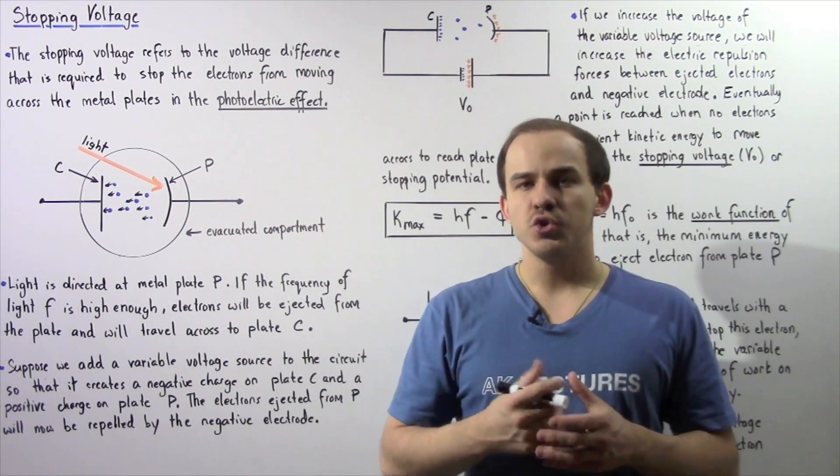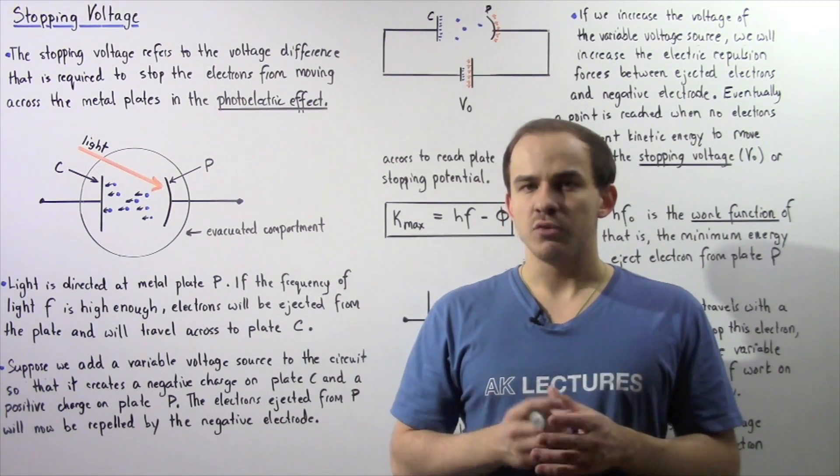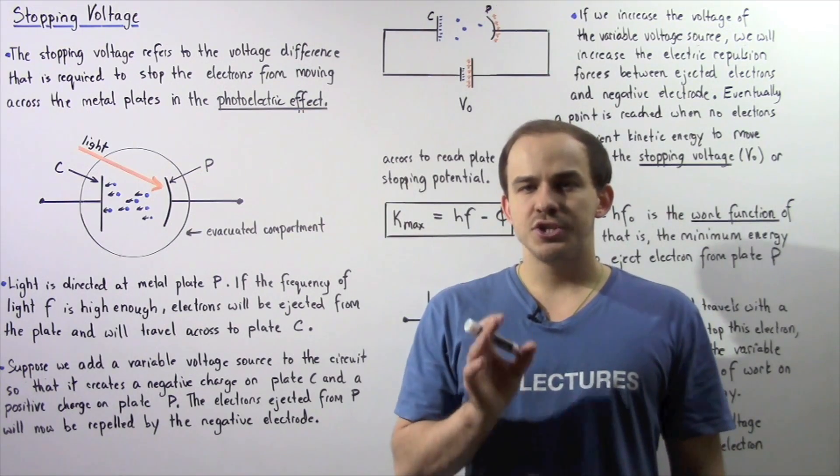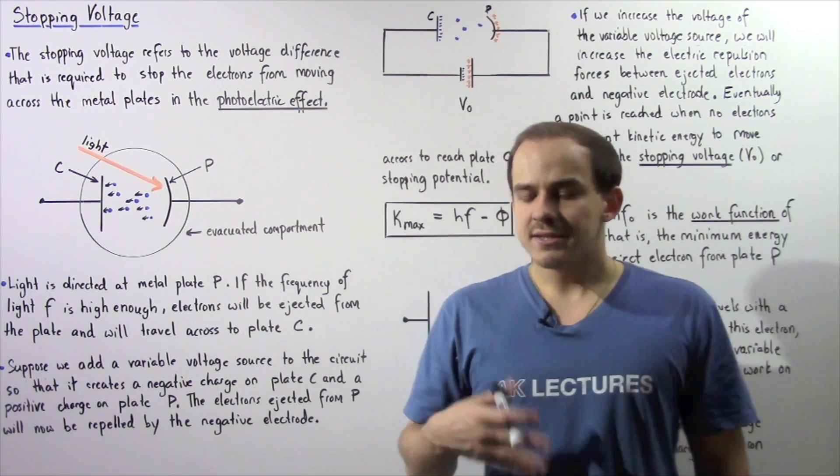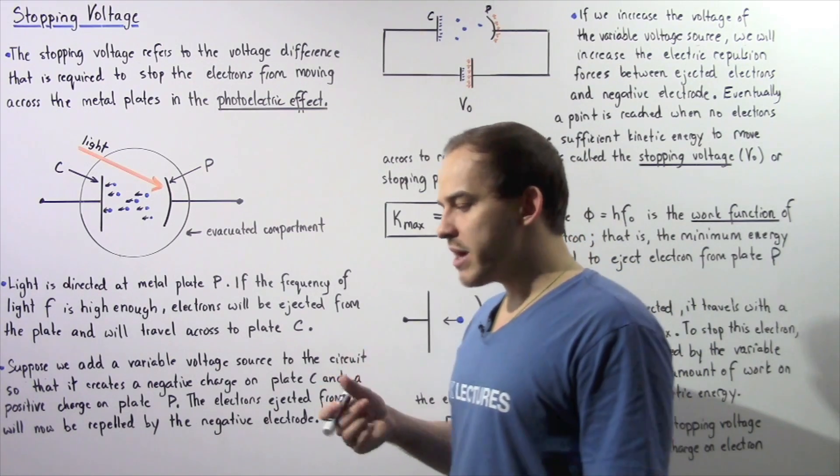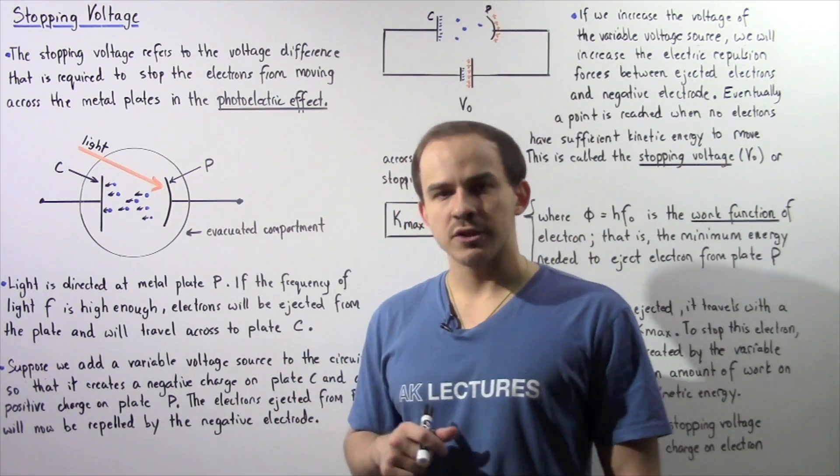The stopping voltage, also known as the stopping potential, refers to the voltage difference that is required to stop electrons from moving between the two metal plates in the photoelectric effect.